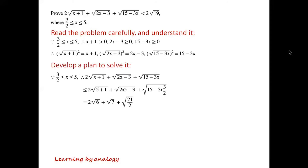Because 3/2 ≤ x ≤ 5, from x ≤ 5 we know that 2√(x+1) ≤ 2√(5+1). And √(2x−3) ≤ √(2·5−3).